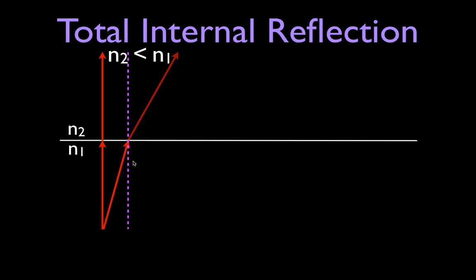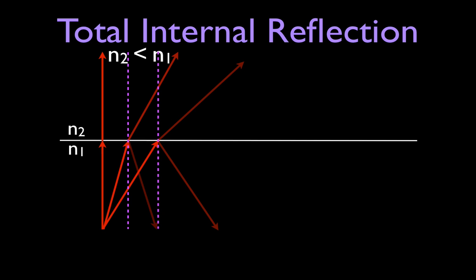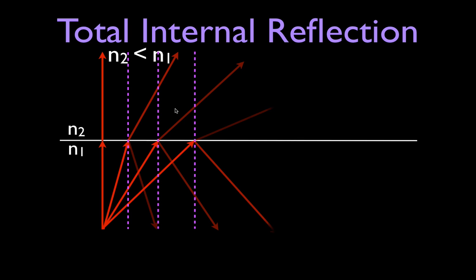Not only is that light ray refracted when it travels across that boundary, but some of the light is actually going to be reflected off of that boundary. As shown here, 70% of the light is traveling across that boundary and 30% is reflected. Now if we increase the angle of incidence, half of the light is being refracted and half is being reflected off that boundary. And if we increase the angle of incidence even more, then more of the light is going to be reflected than refracted across that boundary.